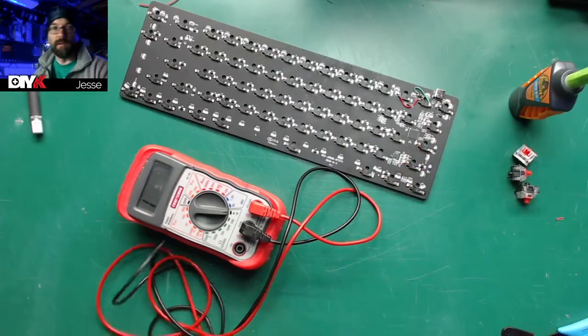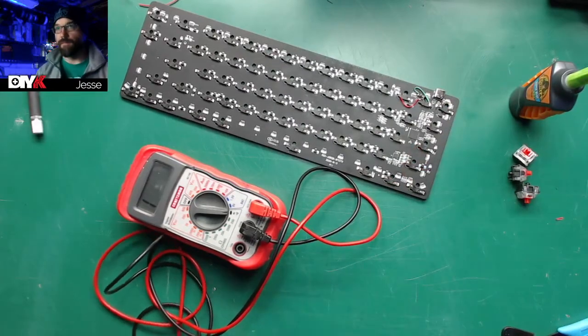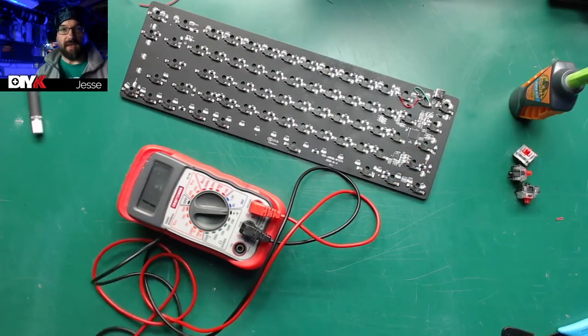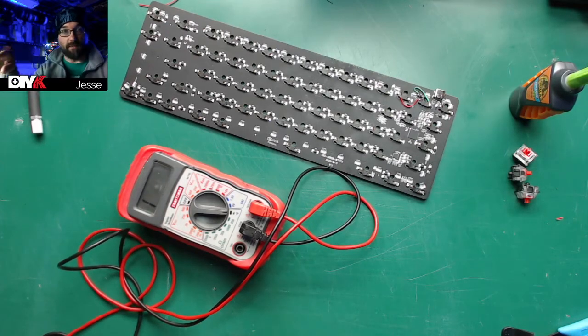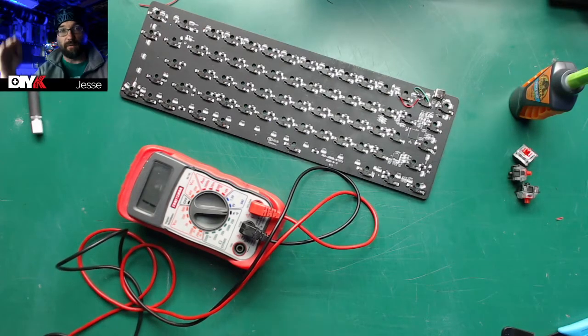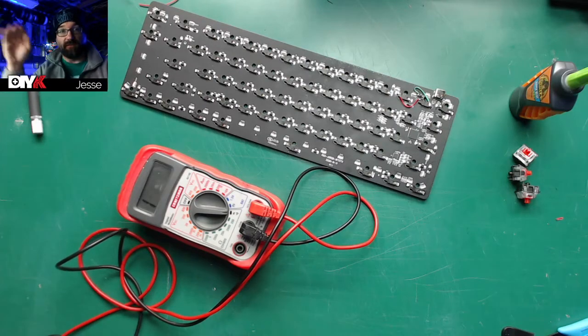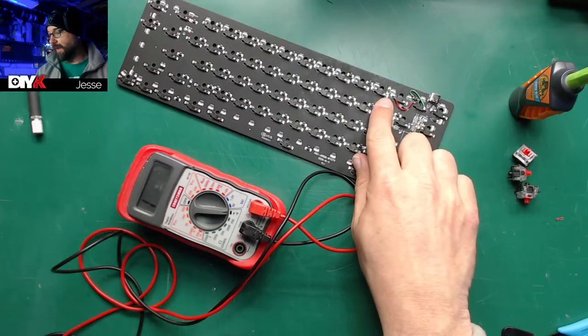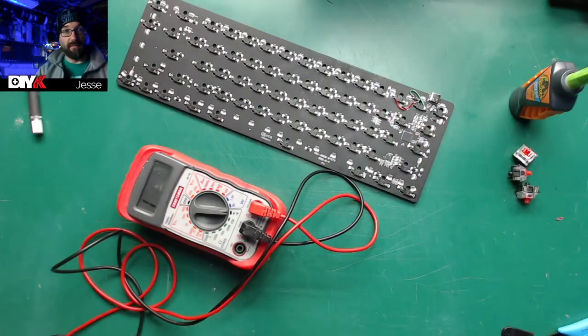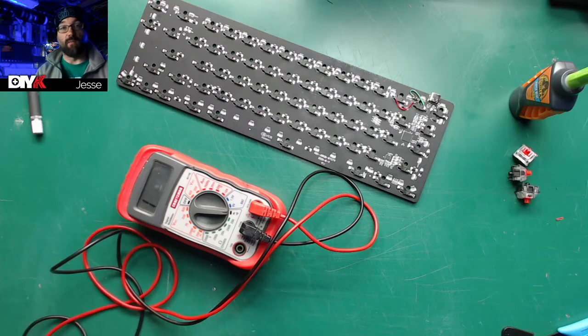For the other one, basically on a keyboard matrix you have a series of switches laid out in a grid, columns and rows. For one of those directions you'll have diodes on each switch. On this board it's on the columns, and the output from the switch goes to the input side of the diode.